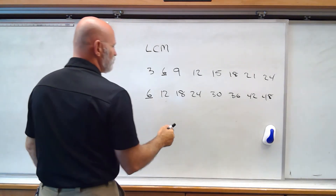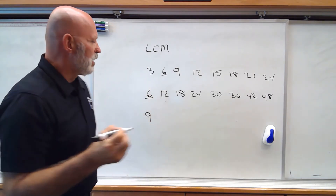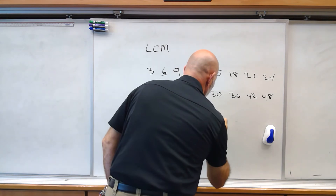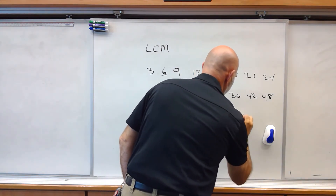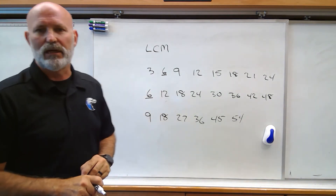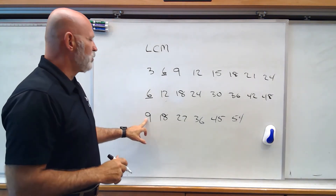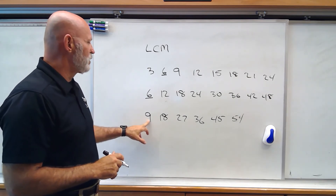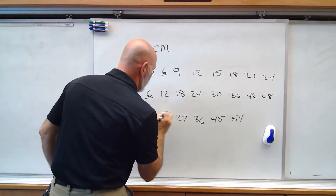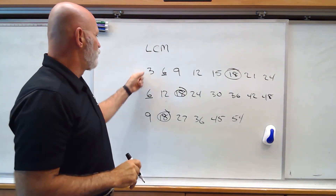But let's say I've also got 9. So now for 9 we've got: 18, 27, 36, 45, 54, and I can just keep going. In this case I've got 3 numbers, and I want to find the least common multiple of all 3. Looking at the lists, the least common multiple can't be less than 9 anyway. We've got 18 appearing in all three lists, so 18 is the least common multiple of 3, 6, and 9.